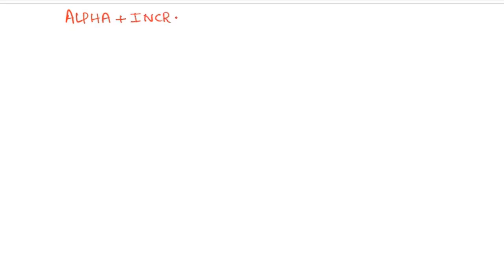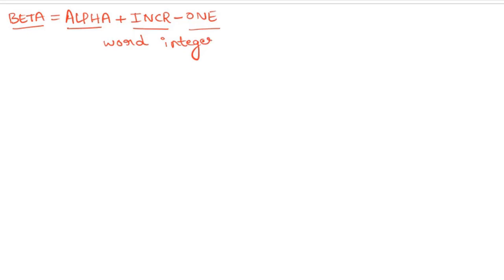The expression we are going to evaluate: I want to perform addition of a variable called alpha with a variable called INCR, subtract some value out of it, and store the result in a variable called beta. Alpha, INCR, and beta are all words storing integers with unknown values.